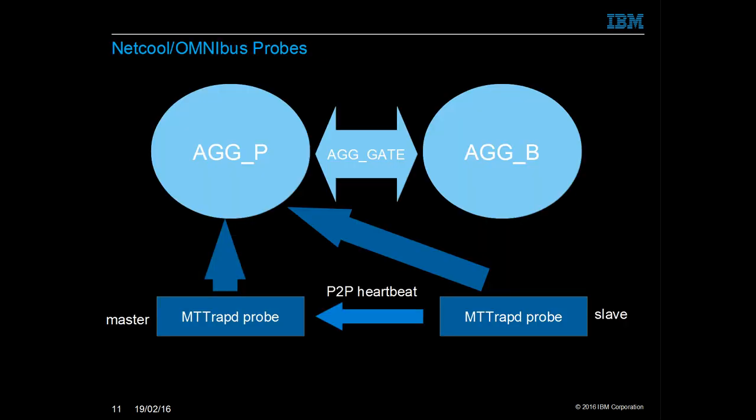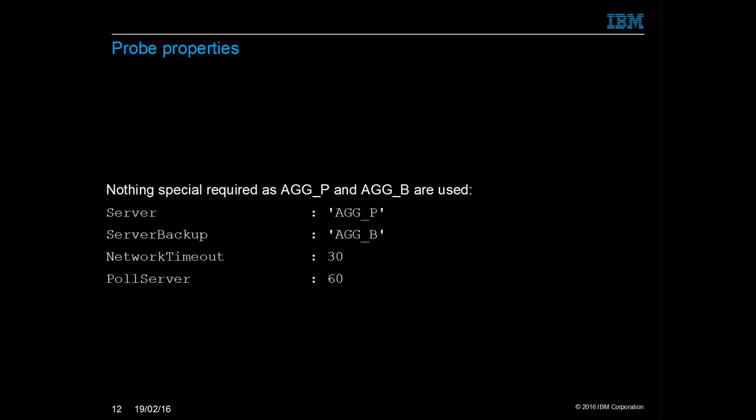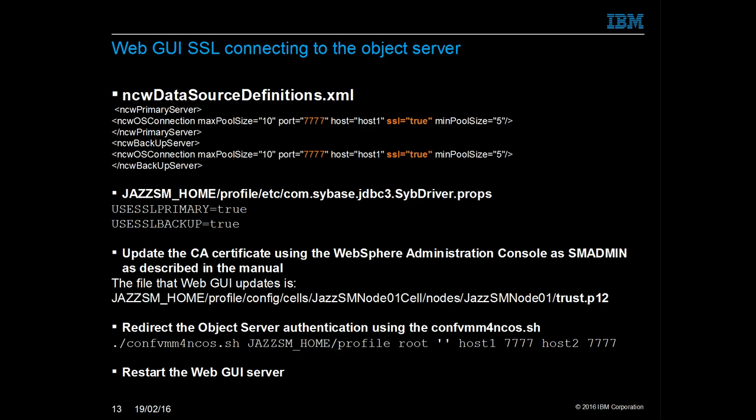The probes can also connect to both aggregation object servers. In the probe's case, each connection is defined generically using the server and server backup properties. Provided the keystore file holds the CA certificates for the object servers, the probe will be able to connect.